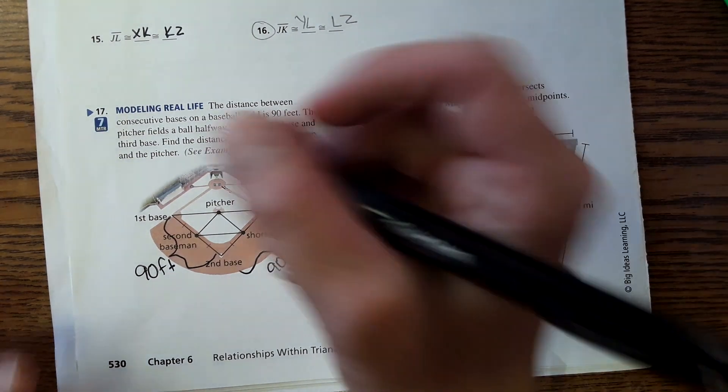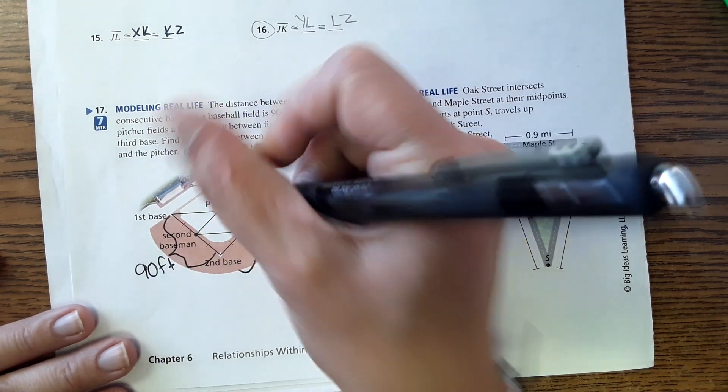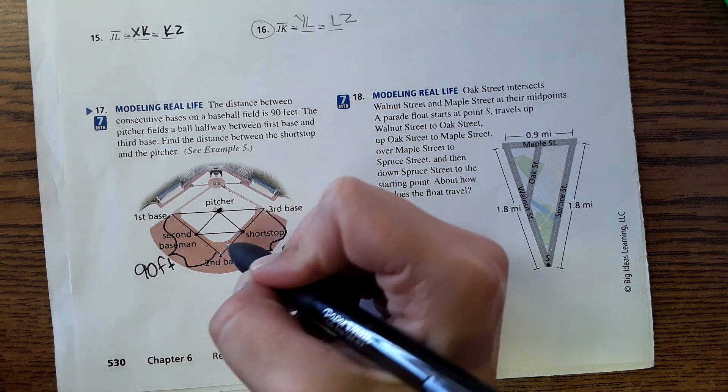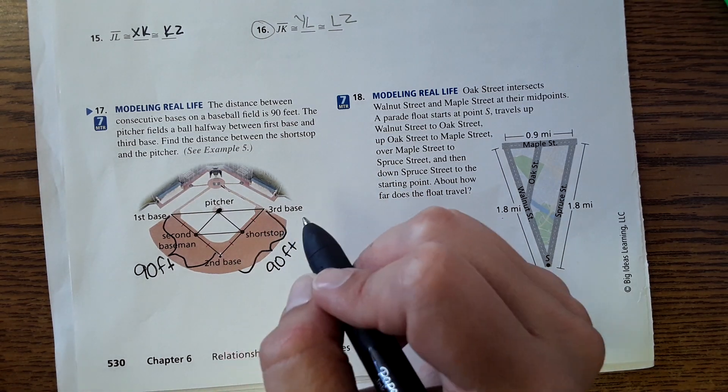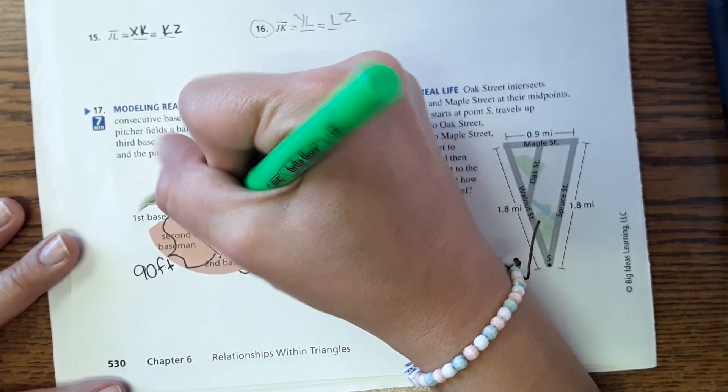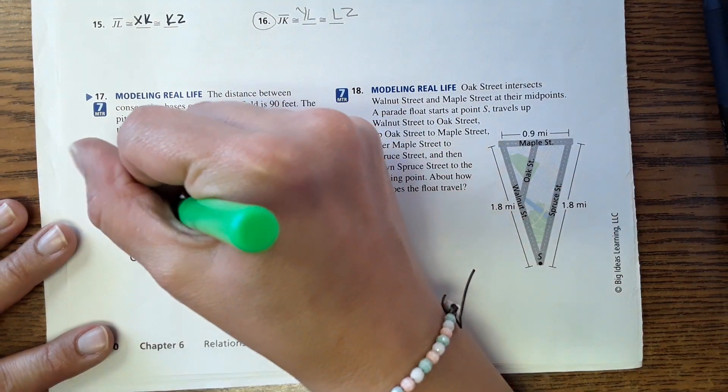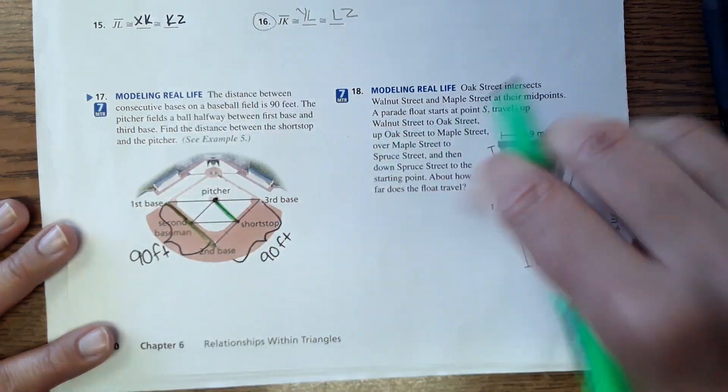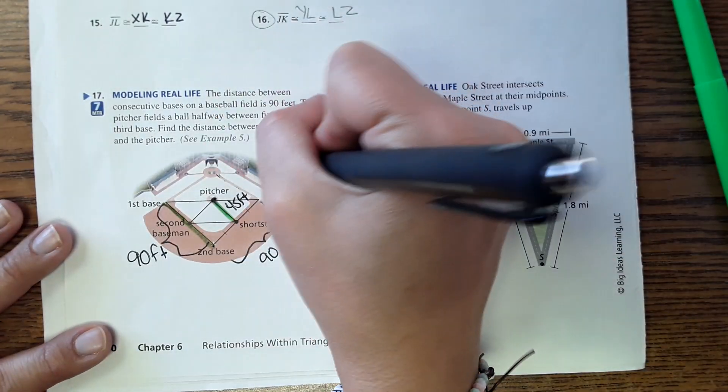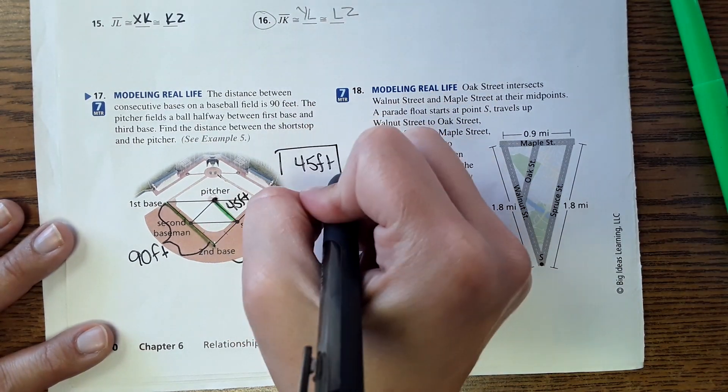Find the distance between a short stop and the pitcher - why didn't you just say that to begin with? Short stop and pitcher right here - oh that's easy. Well if this is 90 feet then this would be half of that, so it'd be 45 feet. And that's the answer.